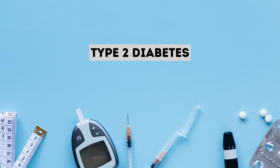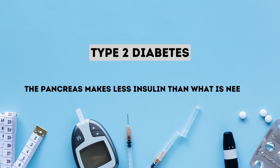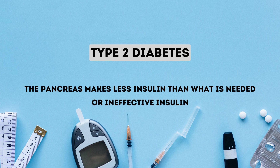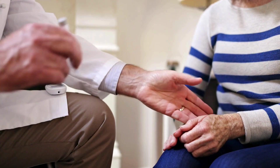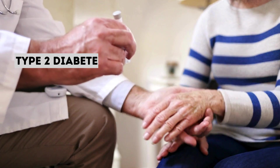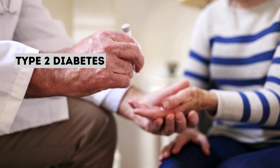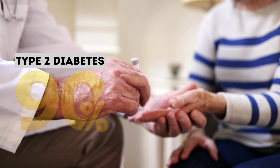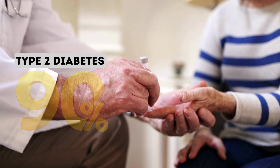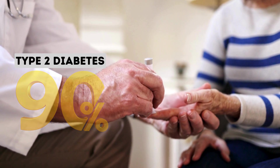In Type 2 diabetes, the pancreas makes less insulin than what is needed, and the body becomes resistant to insulin, meaning those insulins are ineffective. Type 2 diabetes accounts for about 90% of all cases in the population.